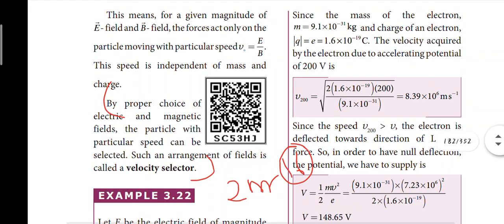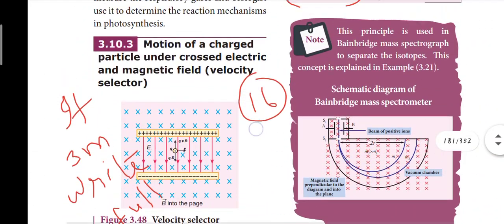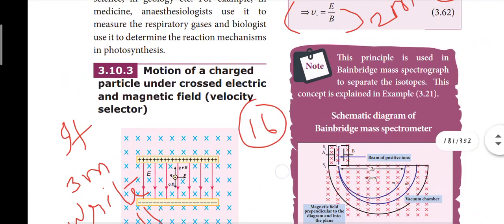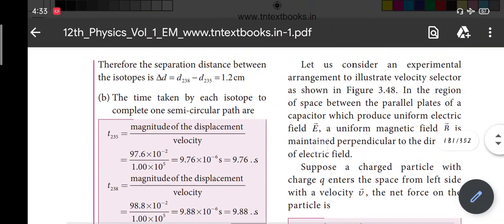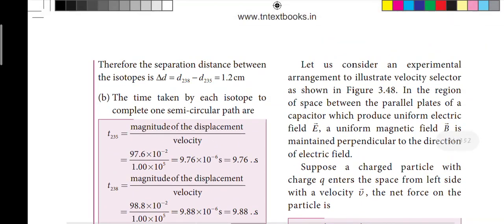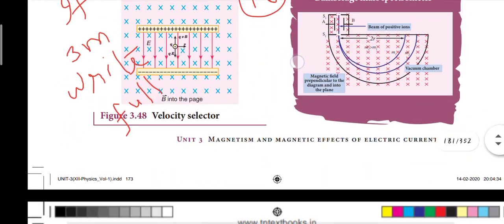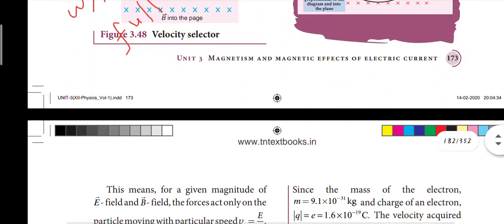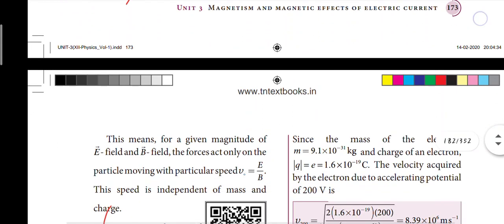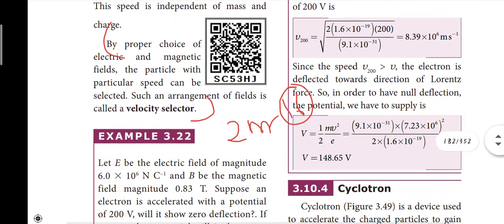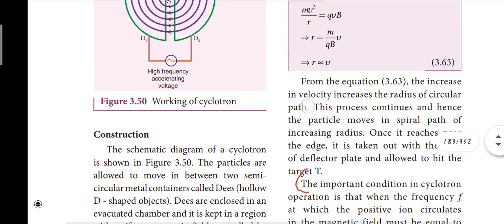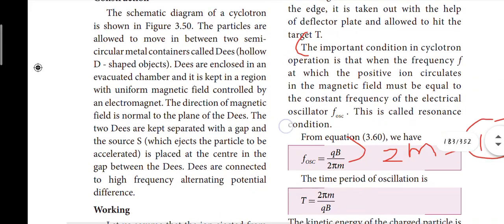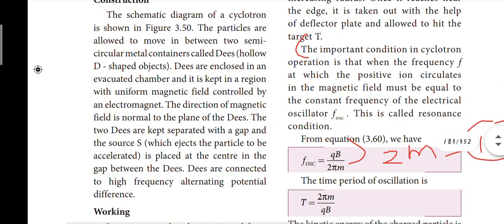For three marks on velocity selector, include the diagram and full equation derivation. For two marks, just the paragraph. Cyclotron: the limitation should be known as a two-mark answer.